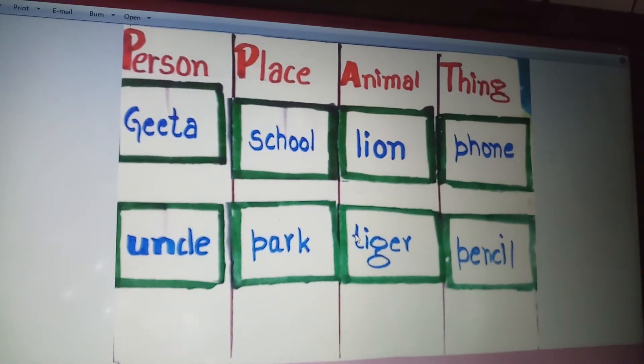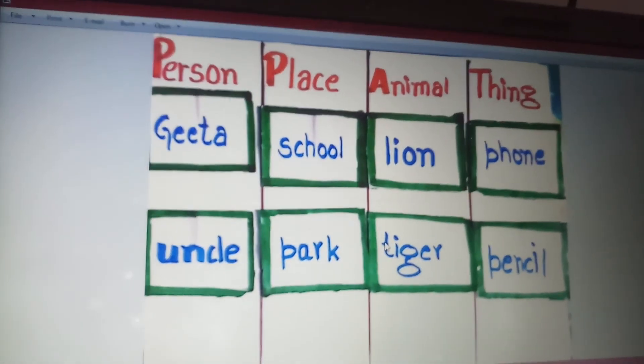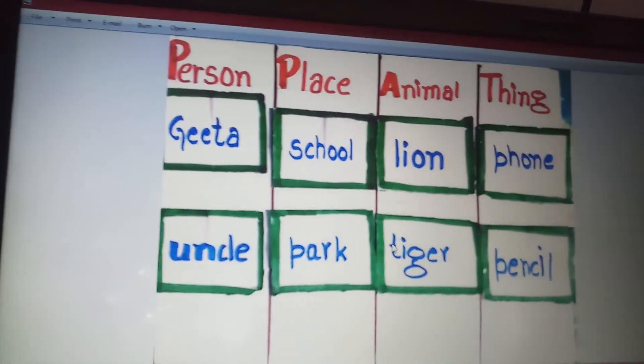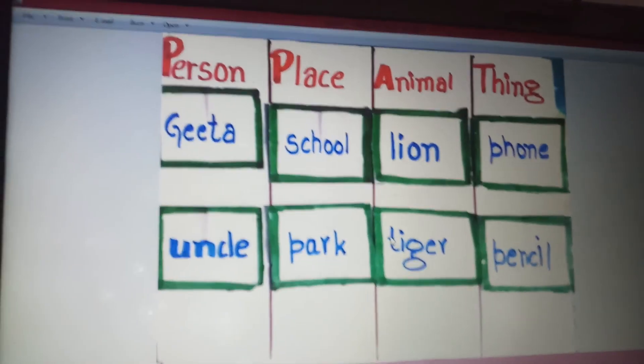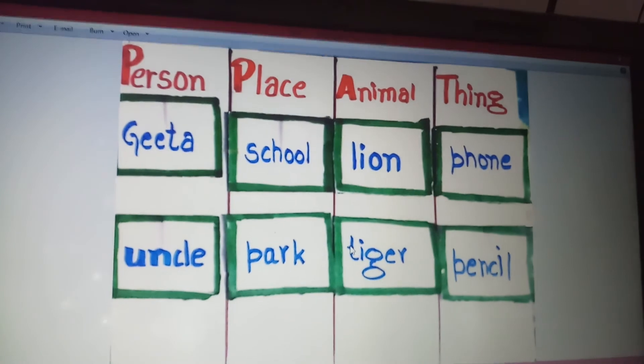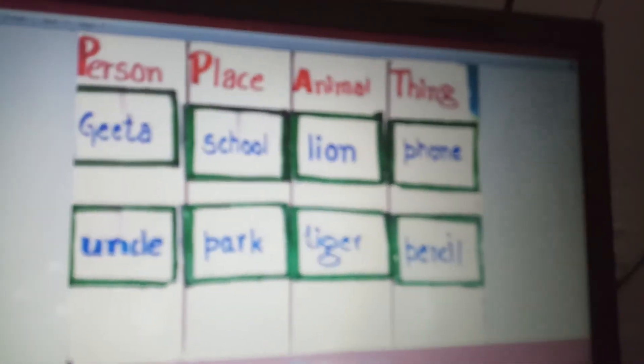And then you will keep all the slips like this. The slips related to the name of persons, you will keep there under persons. Then place, animal and thing. Whoever will do this first, he or she will win the game.